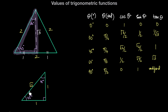We can also use the 45-45-90 triangle, where the two perpendicular sides are each 1 unit, so the hypotenuse is square root of 1 squared plus 1 squared, which is square root of 2. Sine of 45 is opposite over hypotenuse, and cosine of 45 is adjacent over hypotenuse — both equal 1 over root 2, or equivalently root 2 over 2. Tan of 45 degrees, or pi over 4 radians, is opposite over adjacent, so 1 divided by 1, which is just 1. We can use these two triangles to recall cosine, sine, and tan for theta equal to 30, 45, and 60 degrees, or pi over 6, pi over 4, and pi over 3 radians.